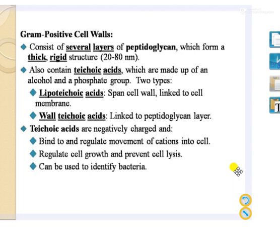Based on differences in the cell wall, bacteria are broadly classified into two classes: gram-positive and gram-negative. The gram-positive cell wall consists of several layers of peptidoglycan — the thickness of peptidoglycan is greater in gram-positive bacteria. Gram-positive bacteria also contain teichoic acid, which is absent in gram-negative bacteria. The teichoic acids present in gram-positive cells are lipoteichoic acids and wall teichoic acids.